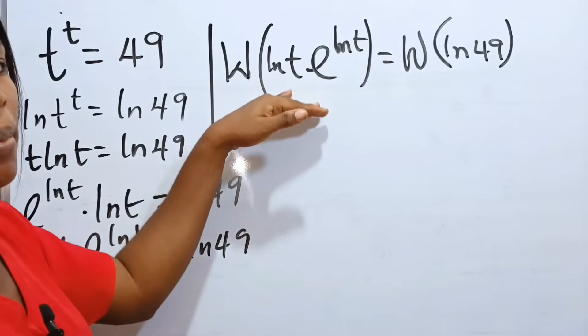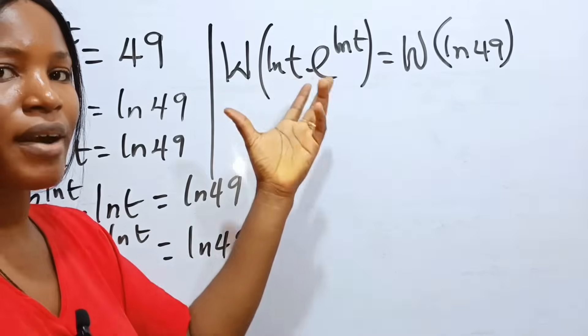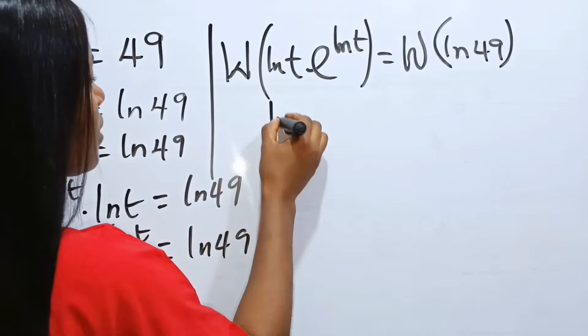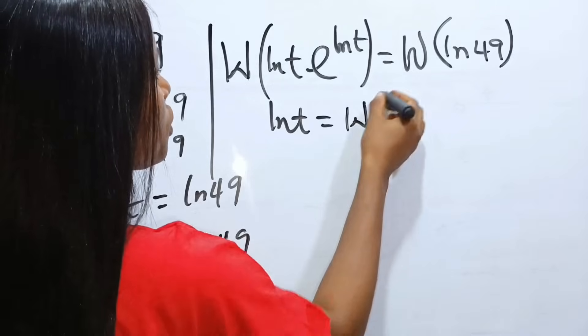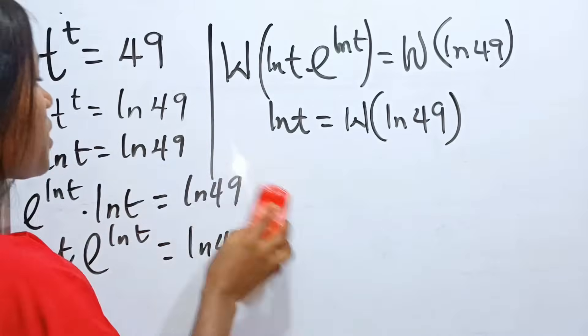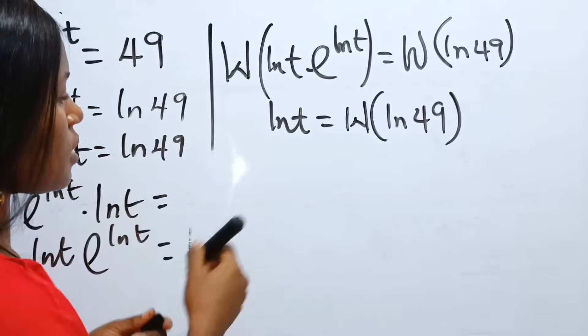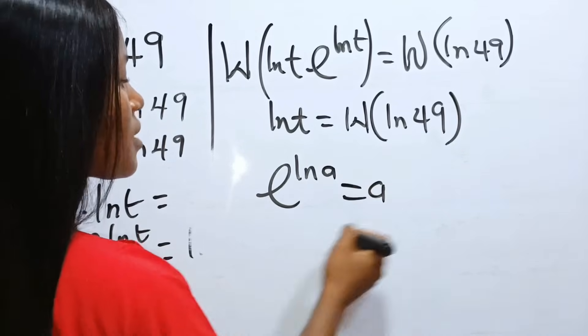Now, remember that when we apply the Lambert W function to the left, because of the way we have arranged our terms, it's going to give us ln t. Simple. So, this is equal to the Lambert W function of ln 49. Now, we are looking for t. Remember that to get t, e to the power of ln anything is still that thing.